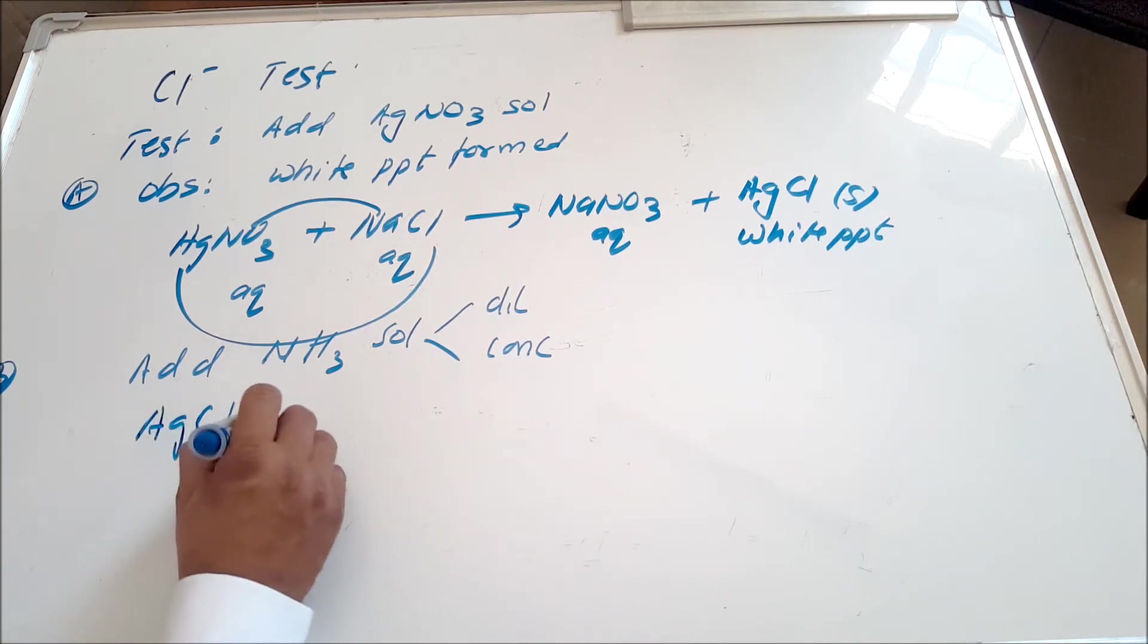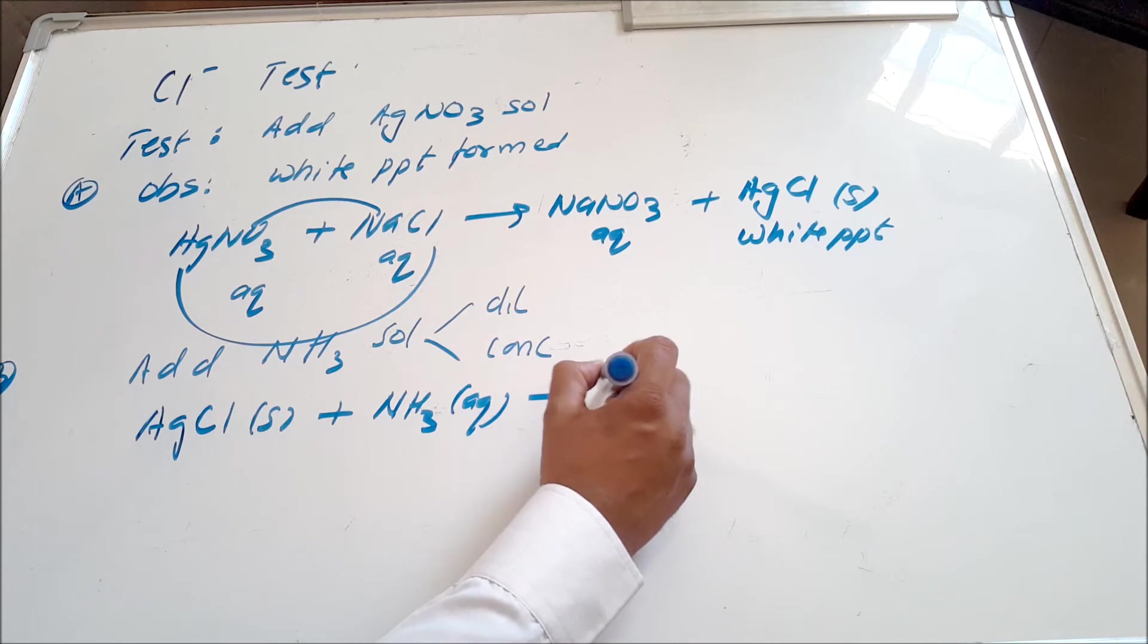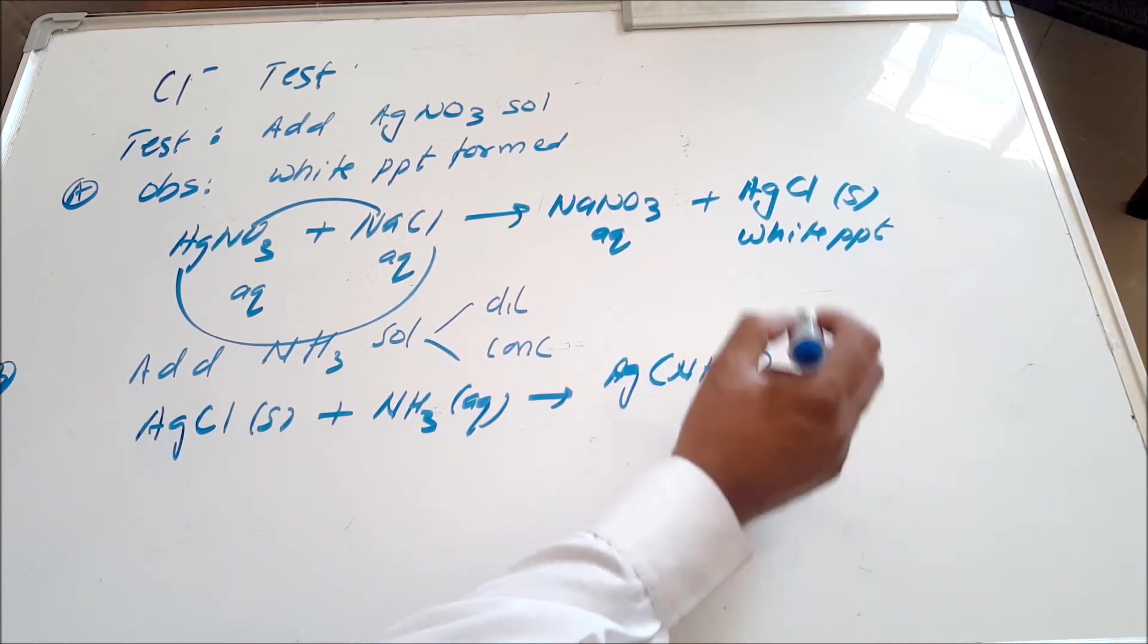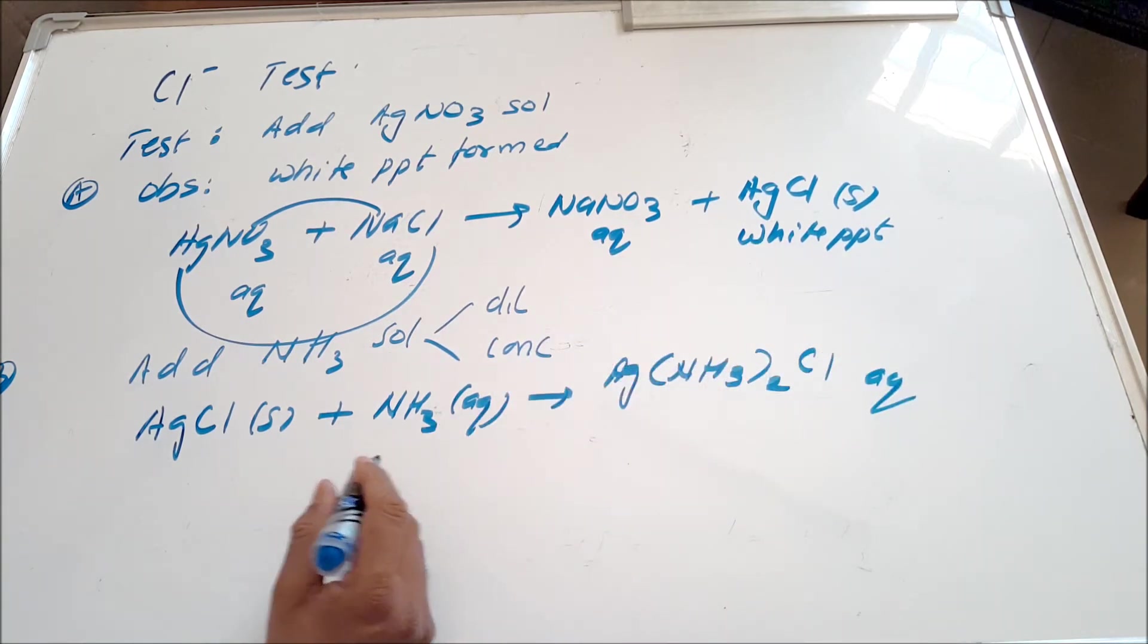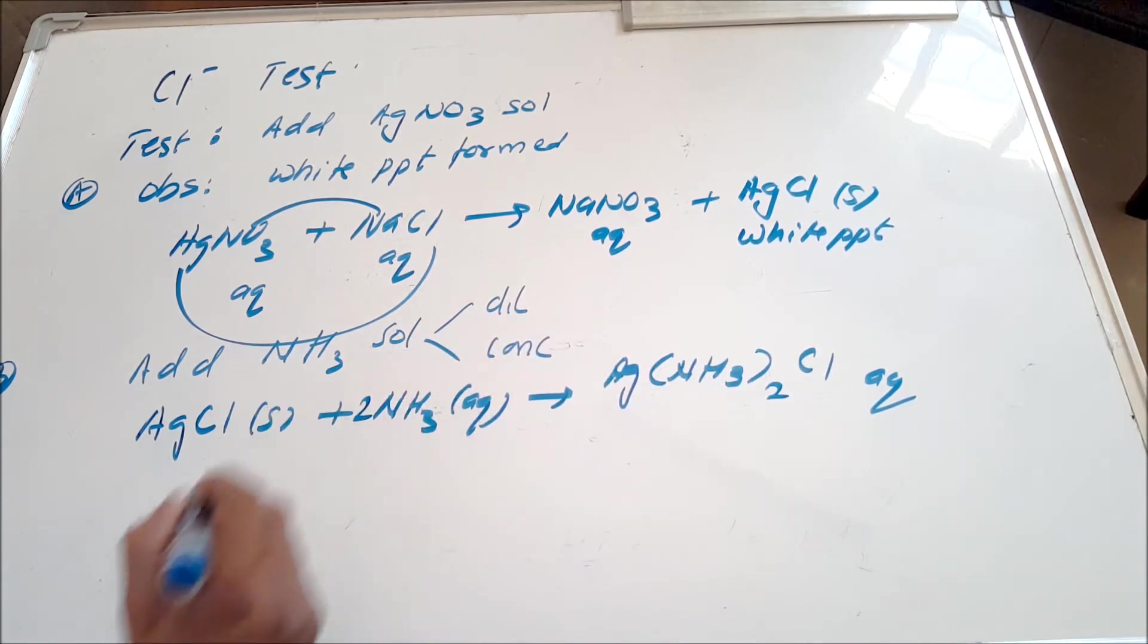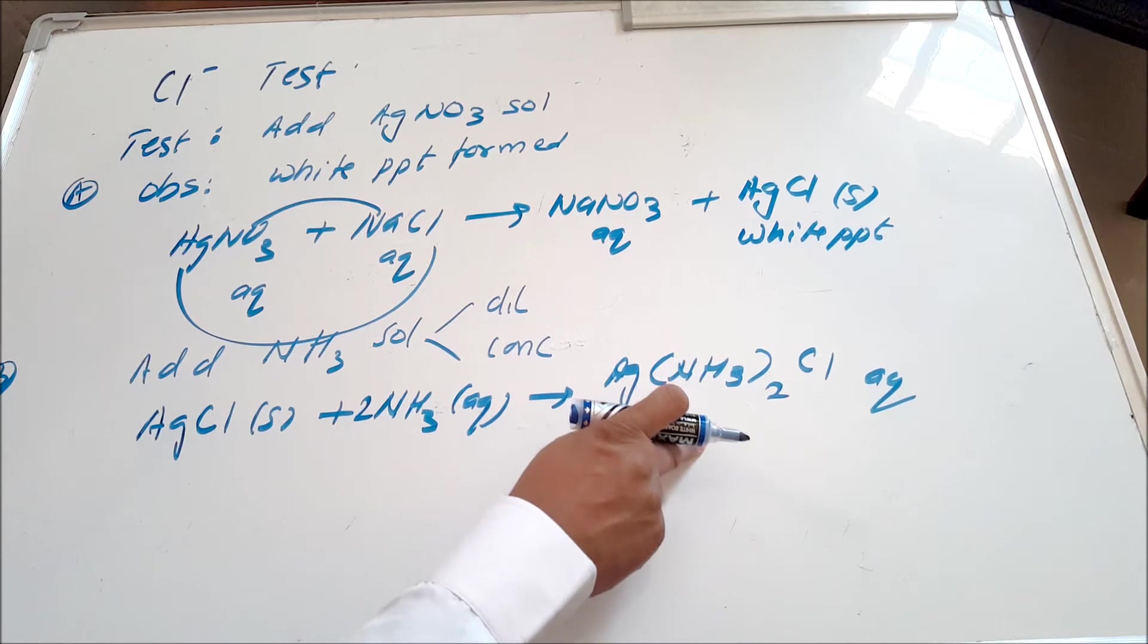The equation that you have to learn is that AgCl, the white precipitate, reacts with ammonia solution and it forms a complex which is [Ag(NH3)2]Cl aqueous. It's a complex, and you study more about complexes in your A levels. But as of now you just have to memorize the equation, and that's the colorless solution that you get.